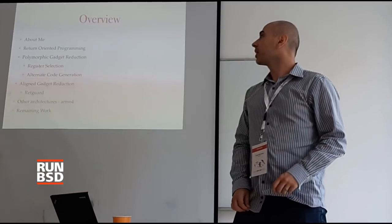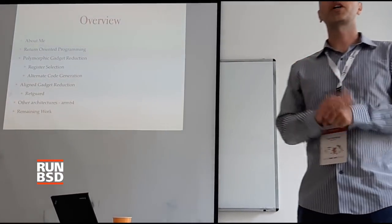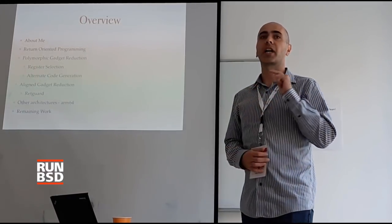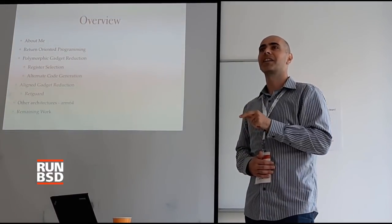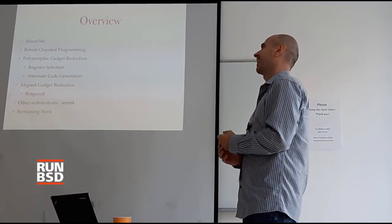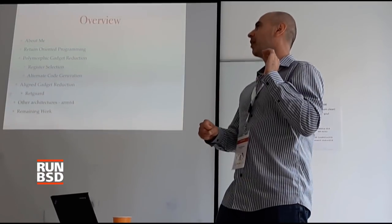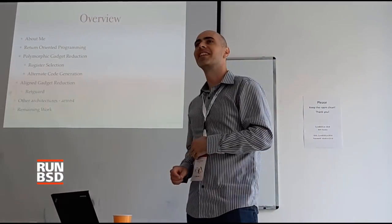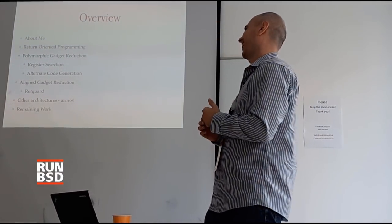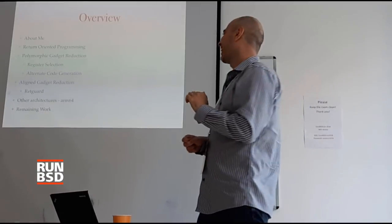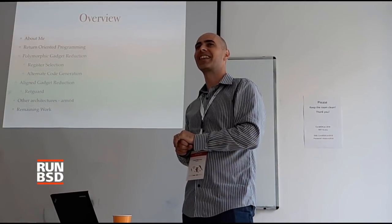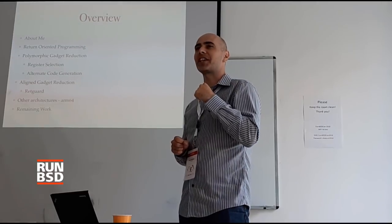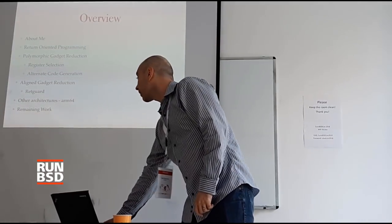So this is what I'm going to cover today. I'm going to give a very brief overview of how I joined the project and what I've been doing. I'm going to talk about return-oriented programming so everyone knows what I mean when I'm talking about ROP. Then I'm going to talk about removing polymorphic gadgets and aligned gadgets. I'll also talk about other architectures and the remaining work at the end.